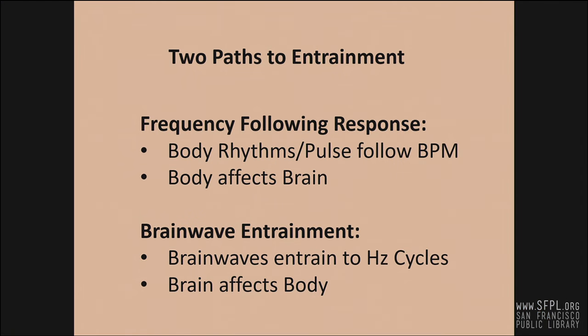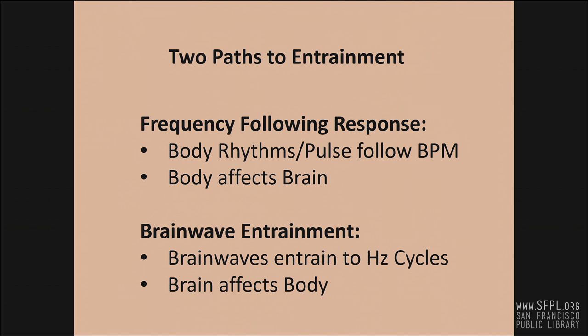Other types of music with faster tempos can be used to induce beta brainwave states. It's important to make the distinction that this is talking about tempo and beats per minute, not wavelengths and cycles per second. There are two paths to entrainment: the frequency following response, where body rhythms follow the beats per minute of the music and affect the brain; and direct brainwave entrainment to hertz cycles, like in the photic flickering effect. This is also not the same theory as the Mozart effect, which has been debunked.